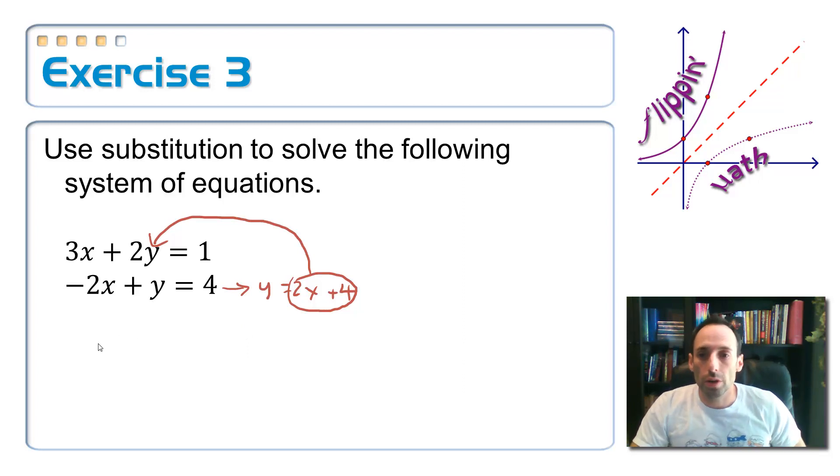So this new top equation becomes 3x plus 2 times, and then I'm taking y out and I'm substituting in 2x plus 4 in its place is equal to 1. Now look, there's no y's in it. So I can solve this equation for x and I get a value for x. So let's distribute here.